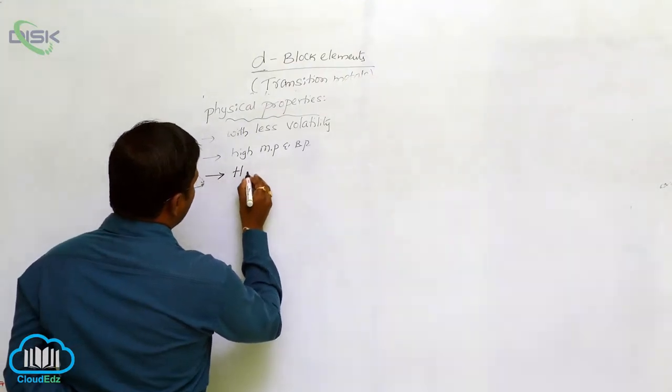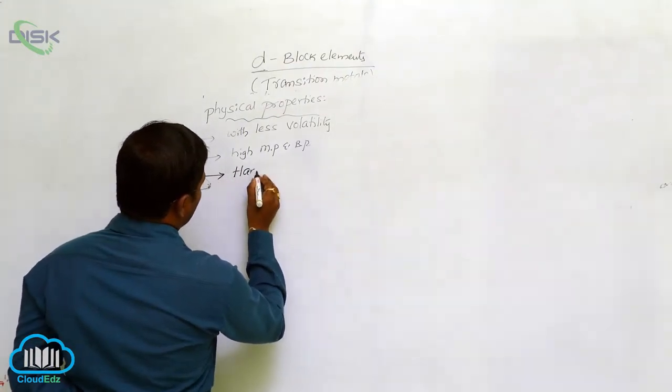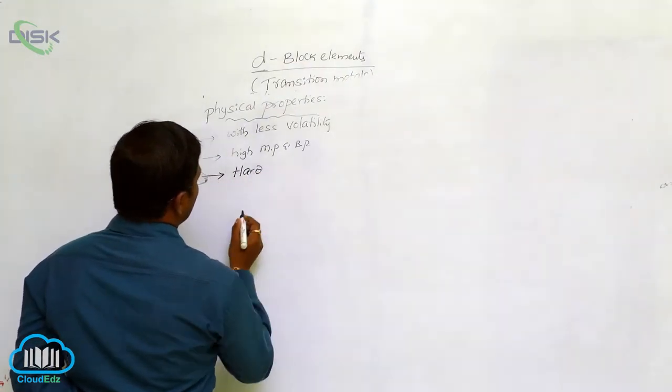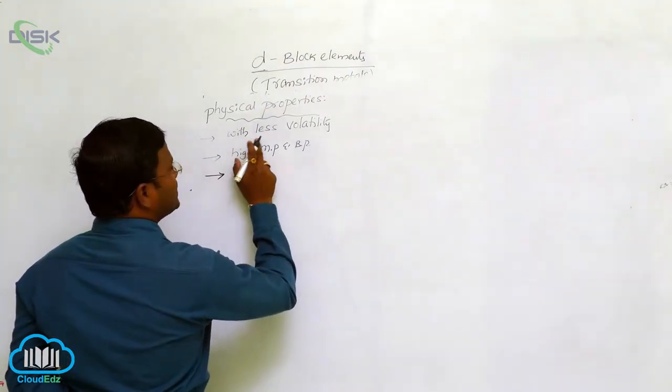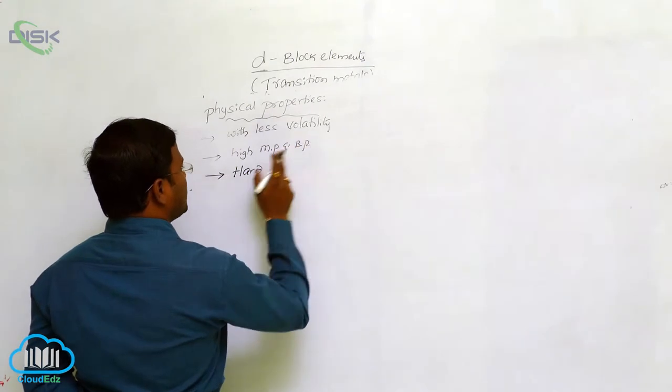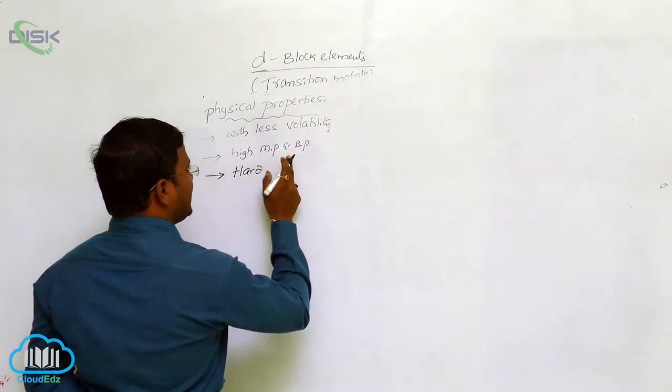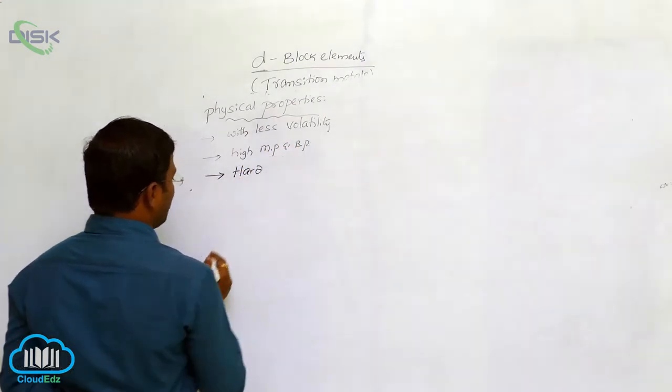D-block elements are hard in character with less volatility and high melting and boiling points.